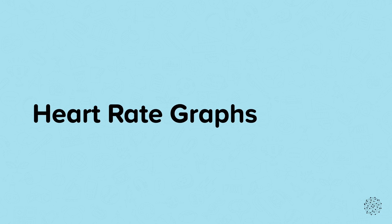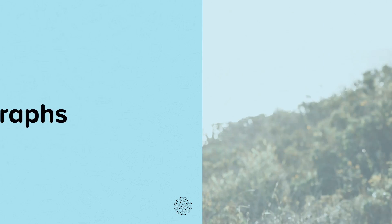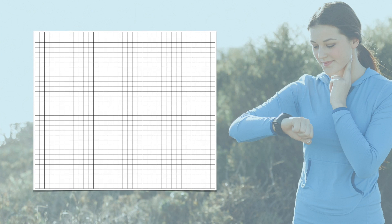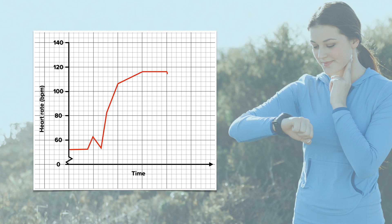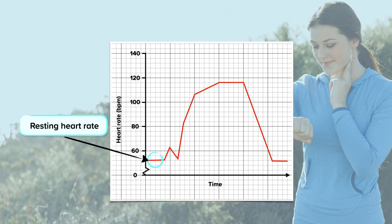This nugget is on heart rate graphs. Here is a graph showing the heart rate of someone before, during and after exercise. We can see that before this person starts exercising their heart rate is at resting. This is represented by the flat horizontal line at the start of the graph.